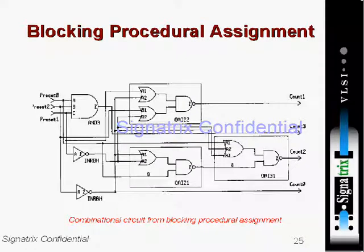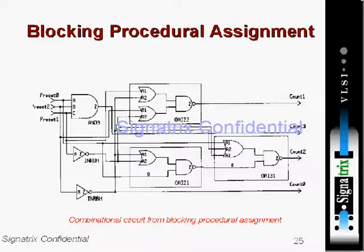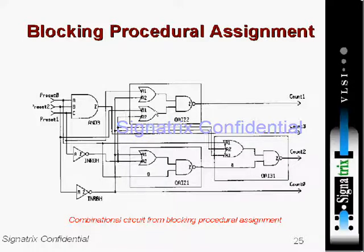Now we look at the blocking procedural assignment. This is a typical example of a blocking procedural assignment. The hardware formed here is formed from the always block. You can't expect the same hardware for every technology — the hardware may be different. Since it is a blocking assignment, we will most probably get a combinational circuit like this.